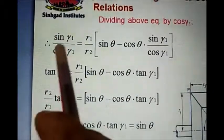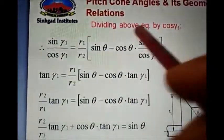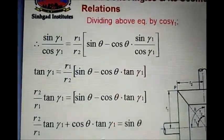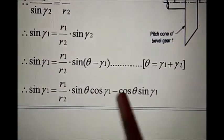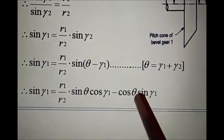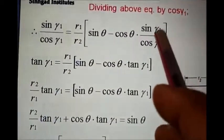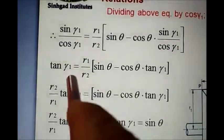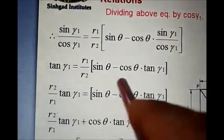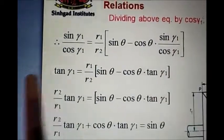Dividing both sides by cos(gamma 1), the left side gives sine(gamma 1) over cos(gamma 1), which equals tan(gamma 1). On the right side, cos(gamma 1) cancels in the first term, giving sine theta, while the second term gives cos theta times tan(gamma 1). So: tan(gamma 1) equals (R1 over R2) times (sine theta minus cos theta times tan(gamma 1)).